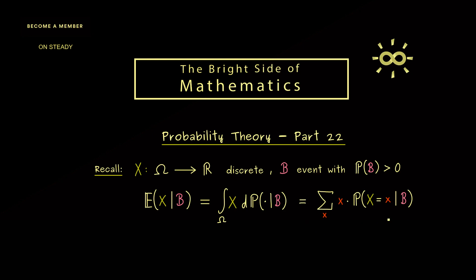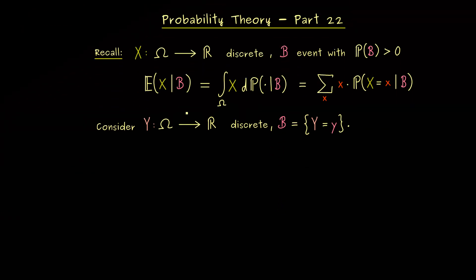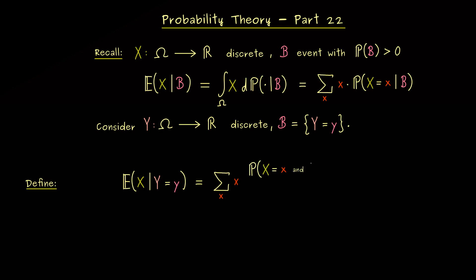Now assume we have a second discrete random variable Y, and we substitute event B with the event that Y equals lowercase y. So instead of E[X|B], we write E[X | Y=y]. This is not really a change — we just choose a very special event for B. The conditional probability can now be written as an intersection divided by a quotient, exactly as the conditional probability is defined.